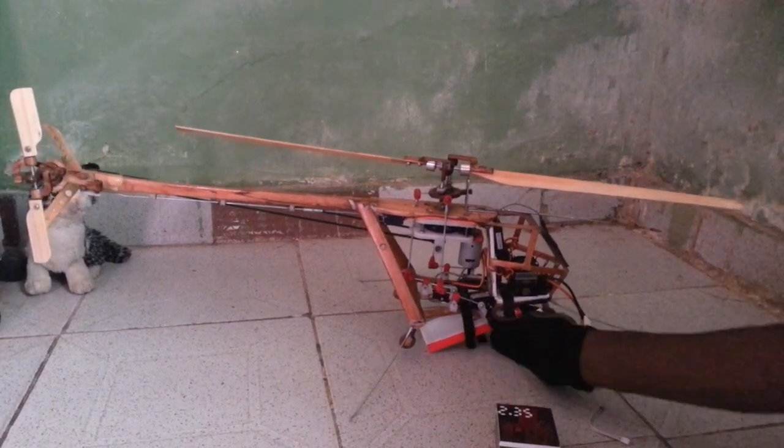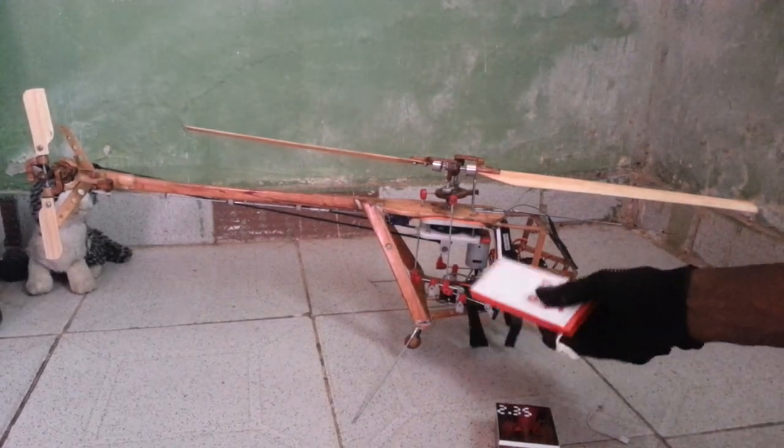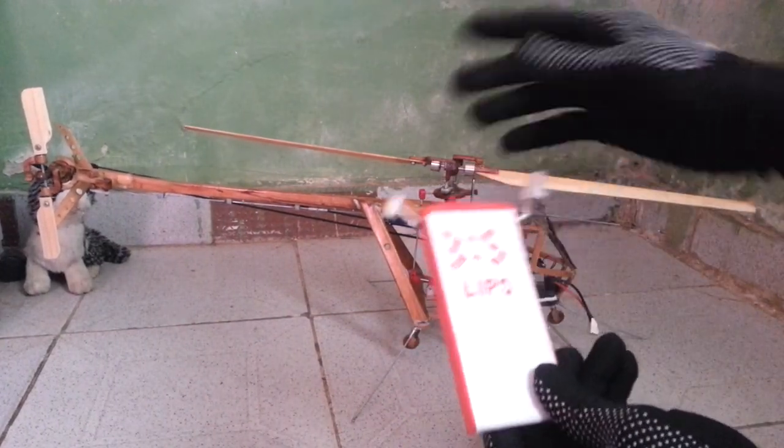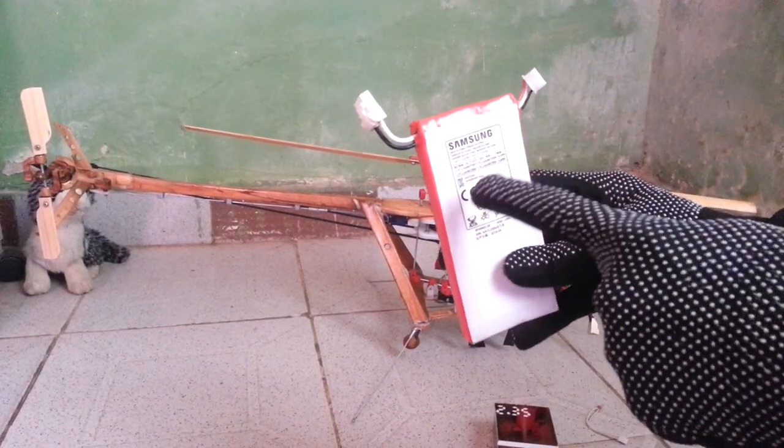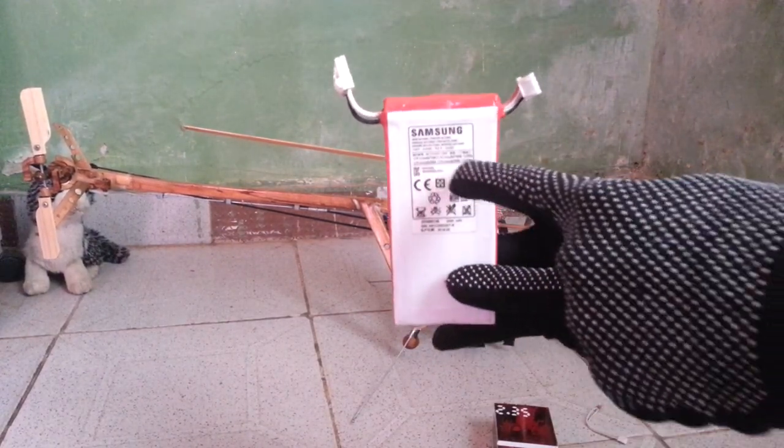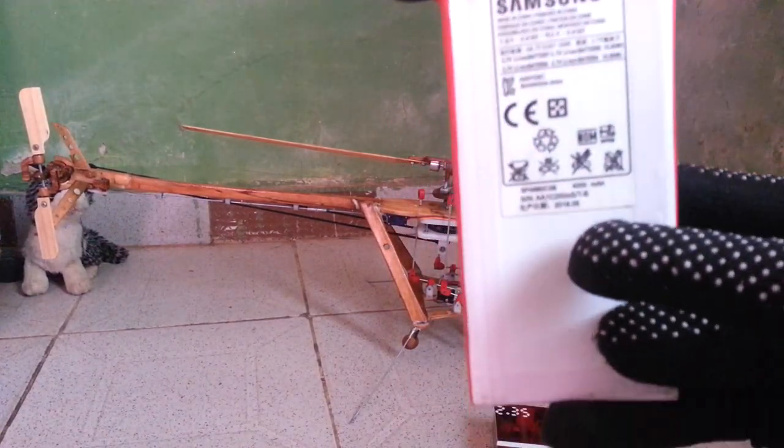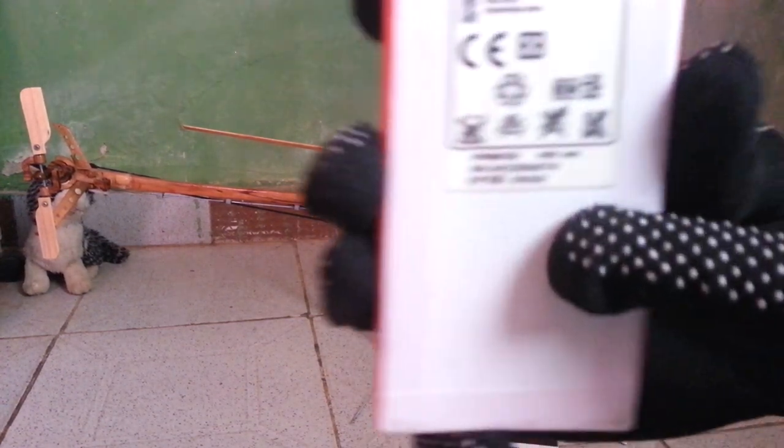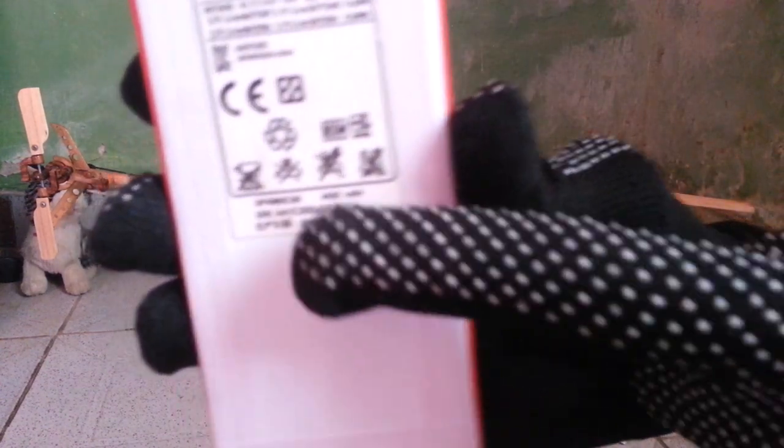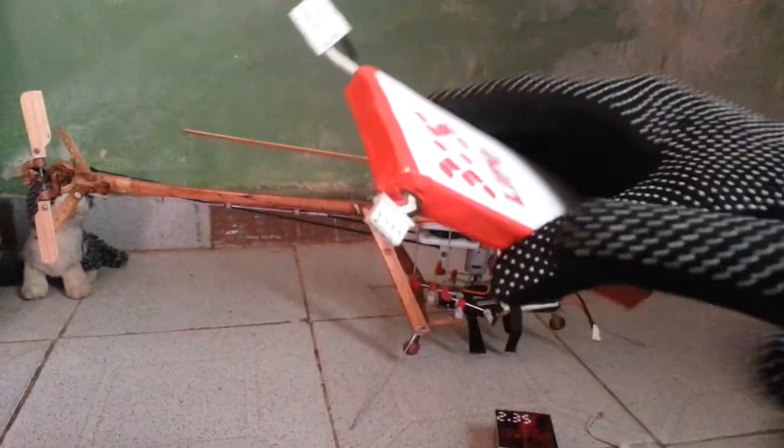This is my homemade lipo barrel. Here is my 3S lipo barrel, which I made with a Samsung mobile phone battery. This is 4,000mAh. Let me make it a clear view. This is 4,000mAh lipo barrel. This is my charging port.